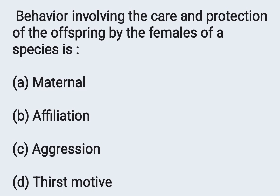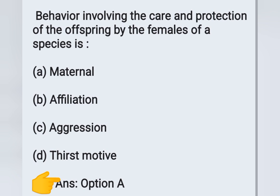Today's first question: behavior involving the care and protection of the offspring by the female of a species. Options: A) Maternal, B) Affiliation, C) Aggression, D) Thirst motive. The care and protection of the offspring by the females of a species is known as maternal care. Option A is the correct answer.